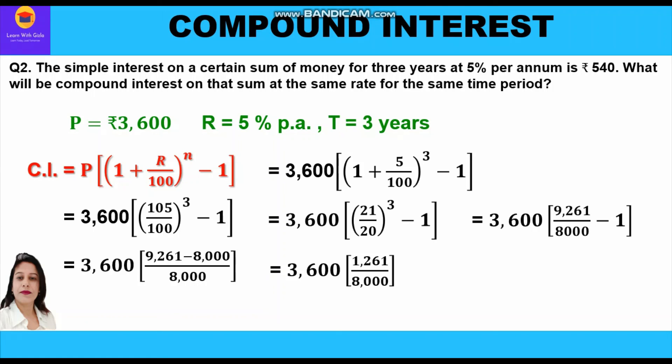Simplifying: 3600 × 1261 / 8000 = rupees 567.45. So the compound interest for question two is rupees 567.45.